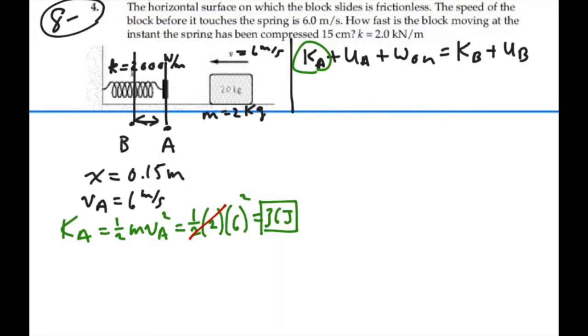What else do we know? Well, we're on a level plane, so we can define our height as zero for both point A and point B. And hence we have no gravitational potential energy at point A and point B. And the spring will not be compressed at point A, so we absolutely have no potential energy at point A.